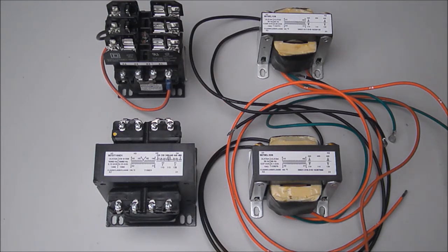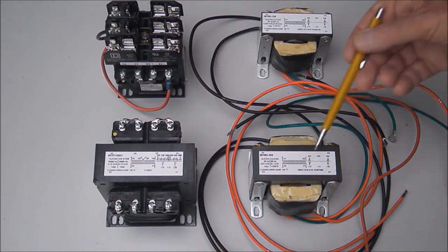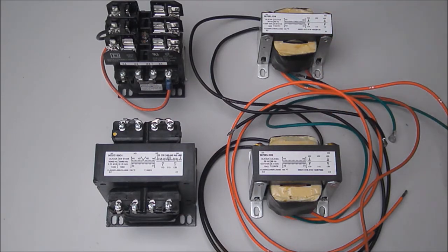Also available but lesser known are the 9070EL series transformers with wire leads instead of screw terminals. The 9070EL series transformers are most often used in Square D Schneider Electric motor control center buckets but may be used in any place where a transformer with wire leads is preferred.